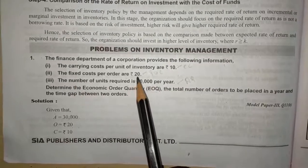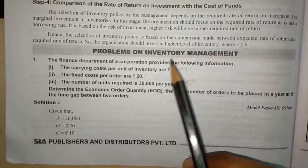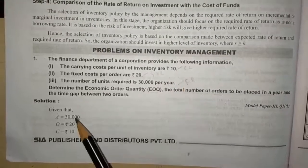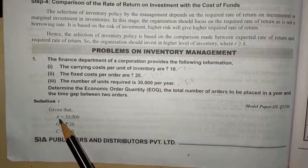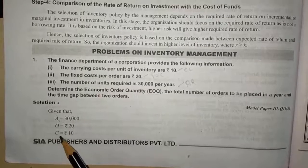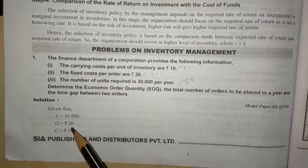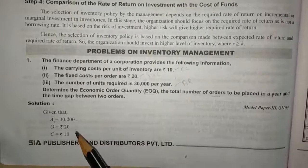Whatever data has been given, we have written over here. A stands for annual requirement, O stands for ordering cost, and C stands for carrying cost. We have written the figures here.